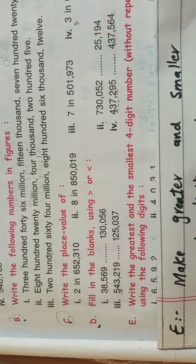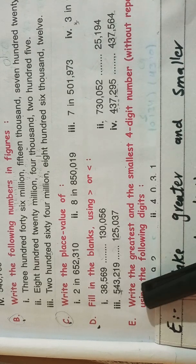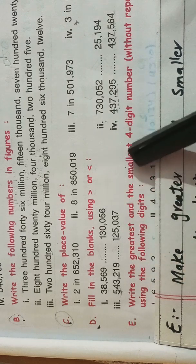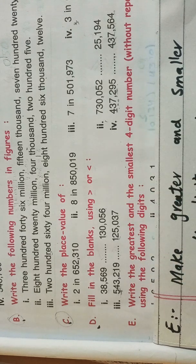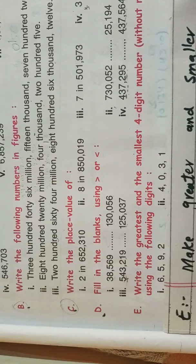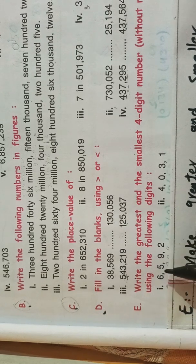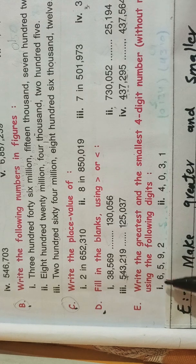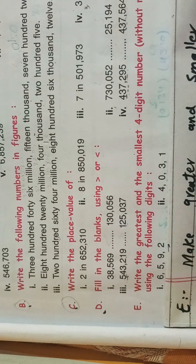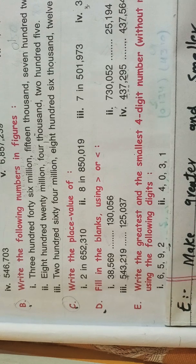Okay, the last question — what is written? Write the greatest and the smallest four-digit number without repeating a digit, using the following digits. This means in question number E, part one, we have four digit values. We have to use them to create a big number and a small number.